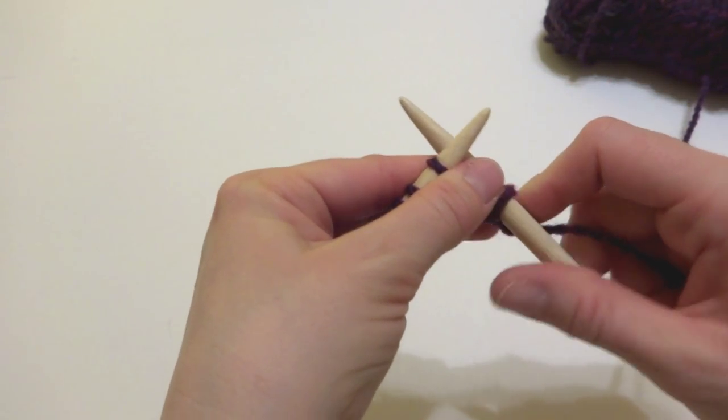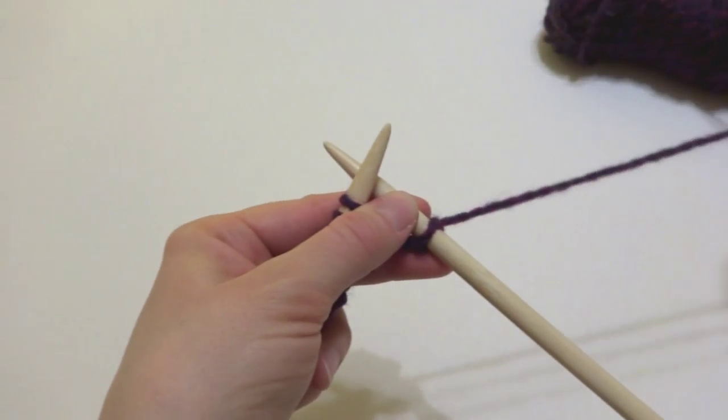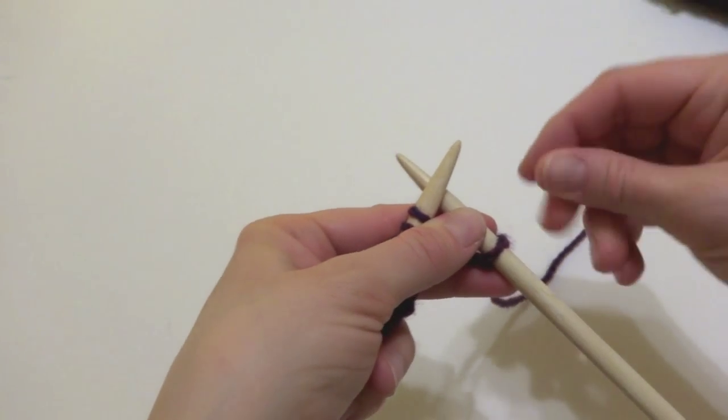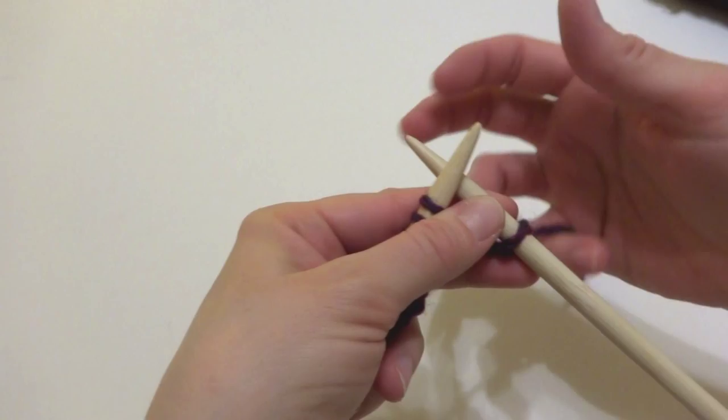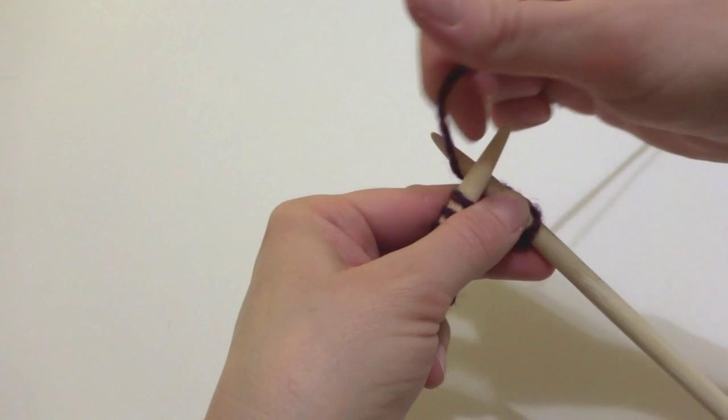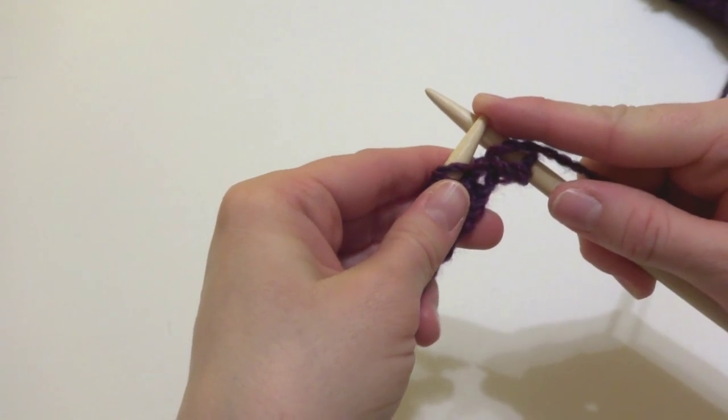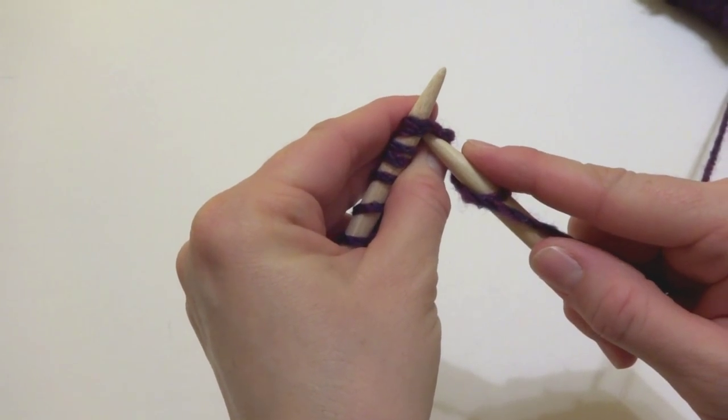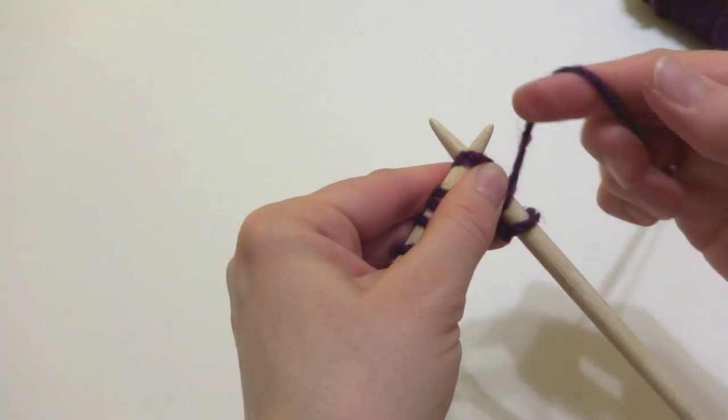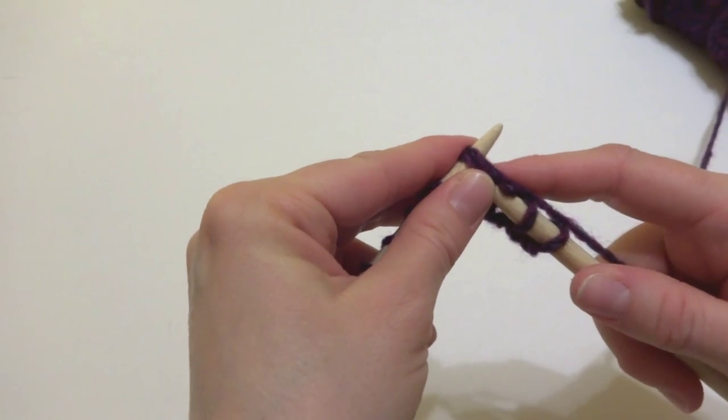And you'll want to cast on an even number. So what I like to do when I want to add an easy eyelet row to my knitting project is yarn over and then knit two together. That will create a pretty little eyelet row in your work very easily.